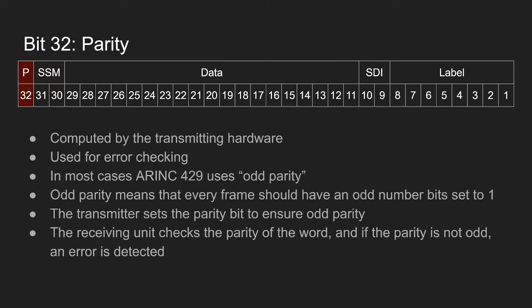The last field is the parity bit — the very last bit transmitted — computed right before the data is sent out by the transmitting hardware. The bit is used for error checking. Usually in ARINC-429 we use odd parity, meaning there's an odd number of ones in the entire 32-bit word. Right before transmission, the transmitter checks how many ones and zeros there are. If there are an even number of ones, it sets the parity bit to 1; if there are already an odd number of ones, it sets the parity bit to 0, ensuring the whole frame always has an odd number of ones. On the receiving end, the unit counts the ones and if there isn't an odd number, it knows there was an issue with the transmission and detects an error.